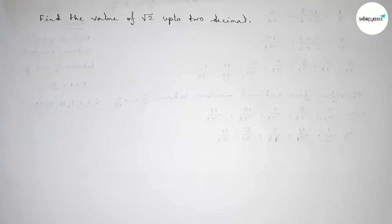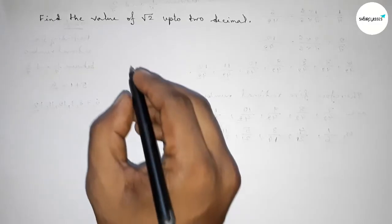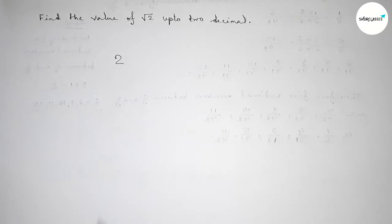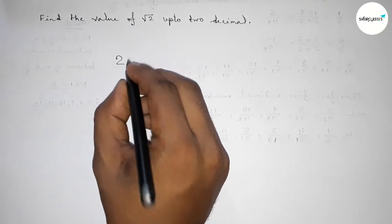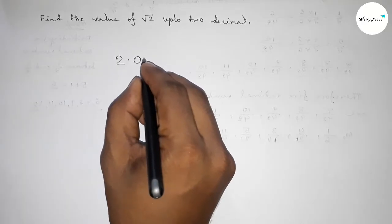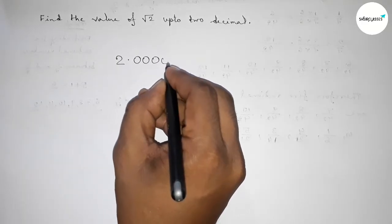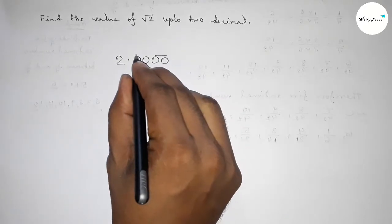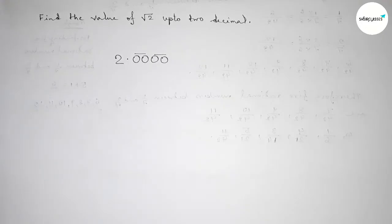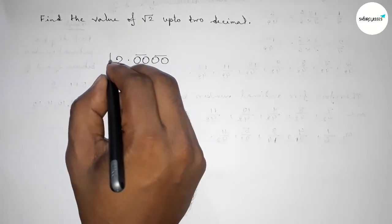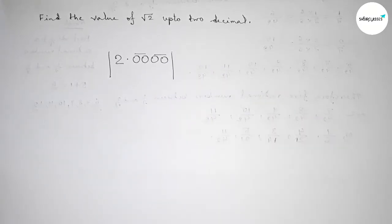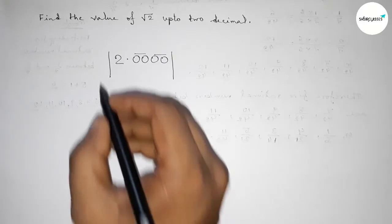First of all we have to write down the number 2 here. Next, taking a decimal point and adding two pairs of zeros — 2.0000 — for two decimal places, making them as pairs of two zeros. Next, drawing the division line on both sides.